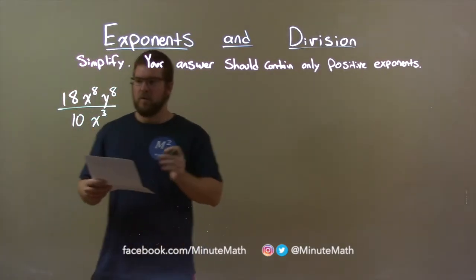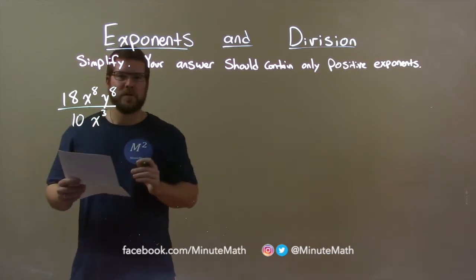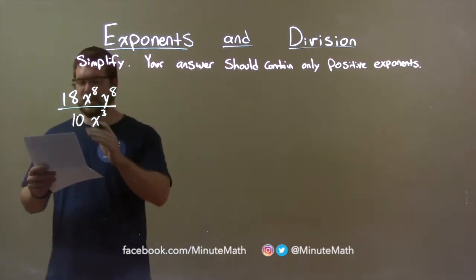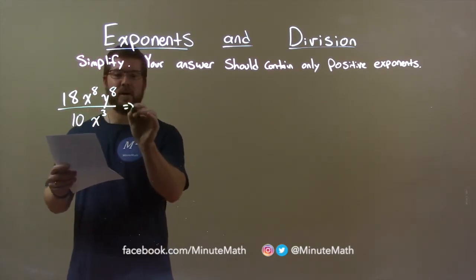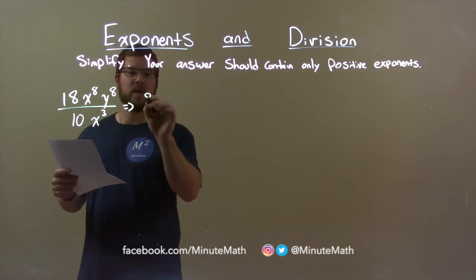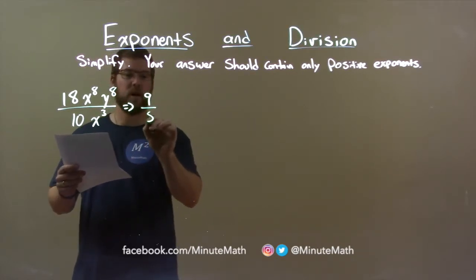Alright, so what I want to do, I'll look at the coefficients 18 divided by 10. Well 18 divided by 10 can simplify. Both of these are divisible by 2, and 18 divided by 2 is 9, and 10 divided by 2 is 5.